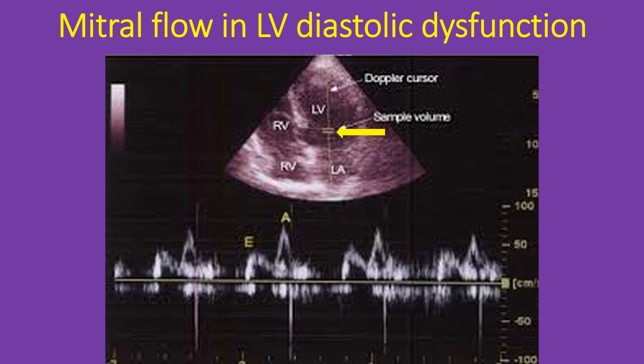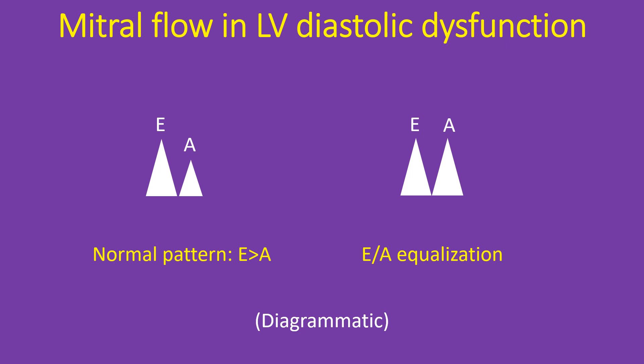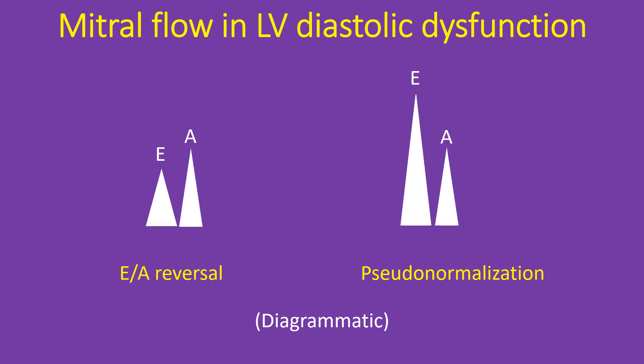The initial portion of the mitral diastolic flow is called the E wave (early diastolic), and the final portion which occurs during atrial systole is called the A wave. Normally most of the left ventricular filling occurs during early diastole and the E wave is taller than the A wave. When ventricular relaxation is impaired in diastolic dysfunction, the atrial contribution progressively increases and the A wave height increases, leading to equalization of the E and A waves. As severity increases, the A wave becomes taller than the E wave — this is known as E by A reversal.